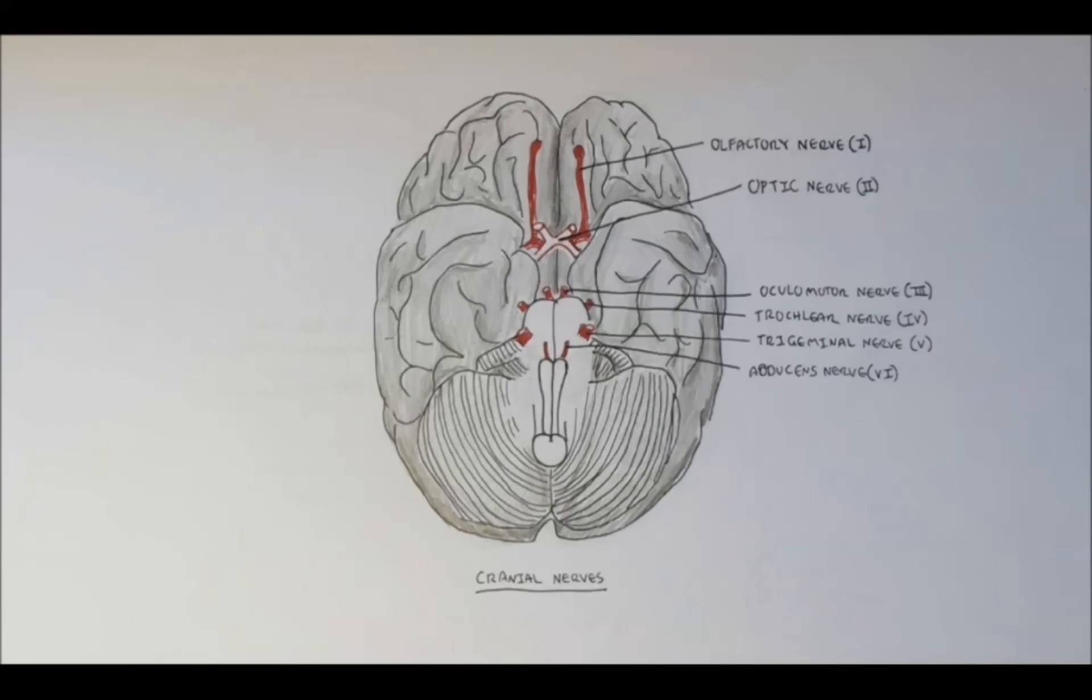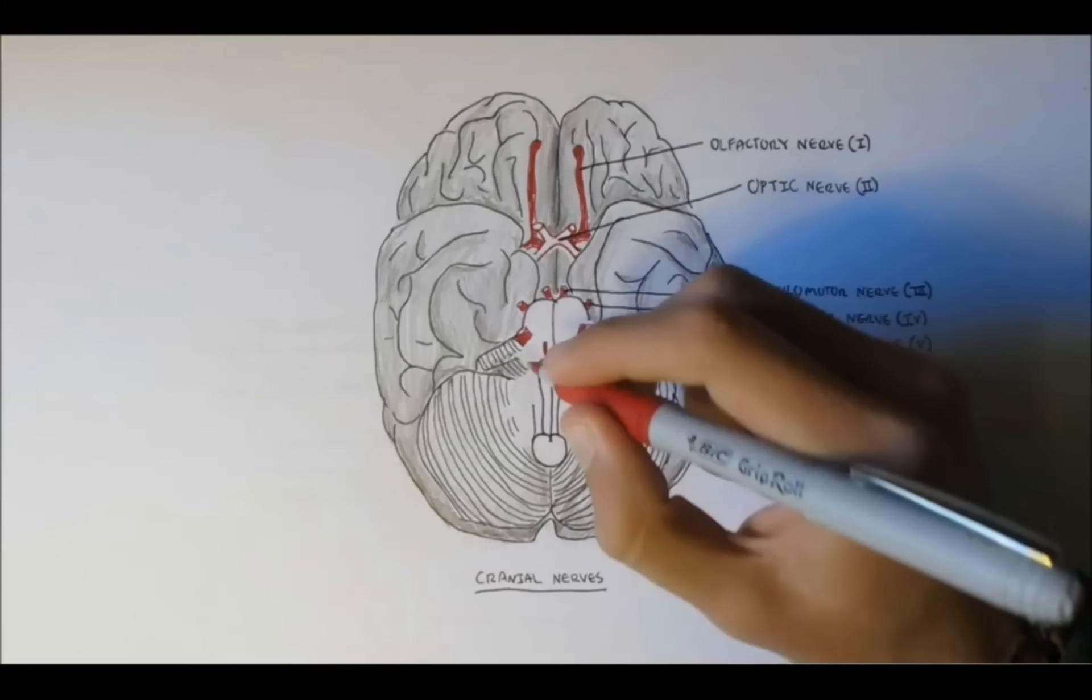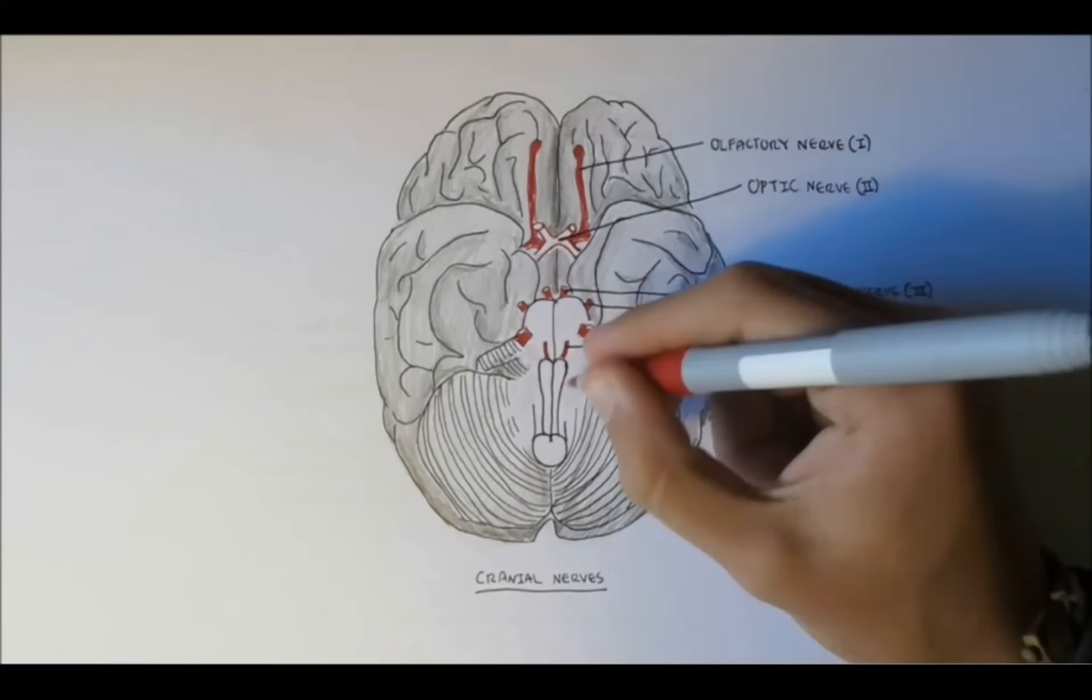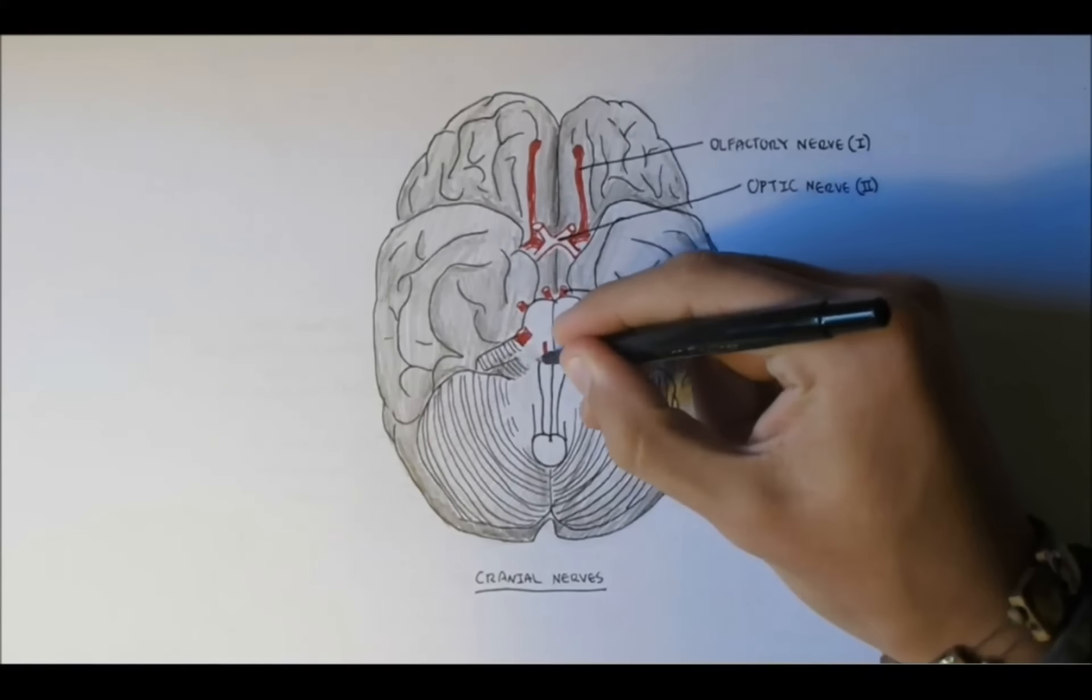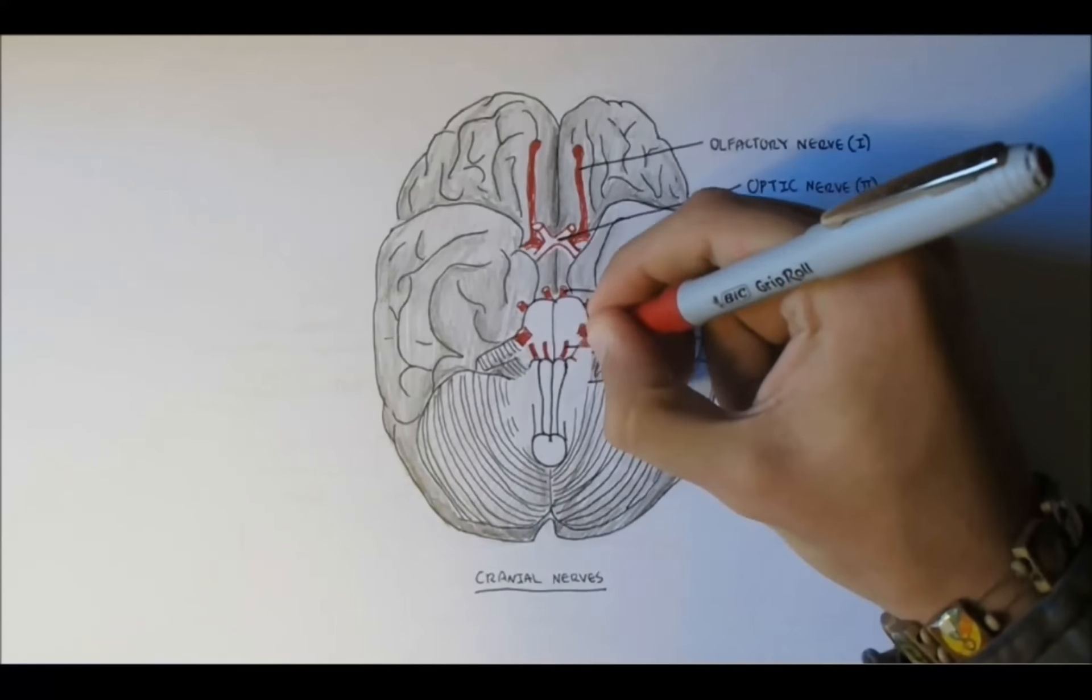Nerve 7, which is right next to nerve 6, is the facial nerve, cranial nerve 7.